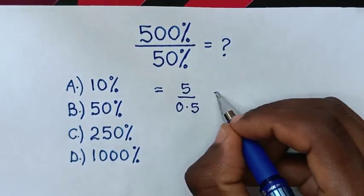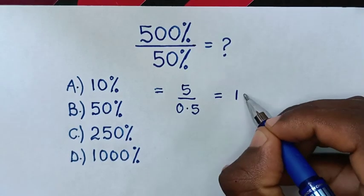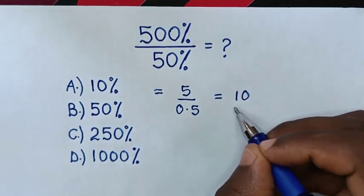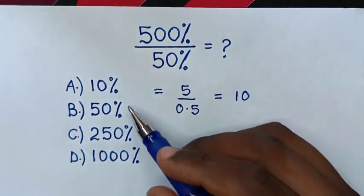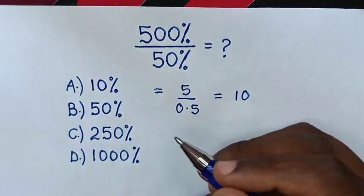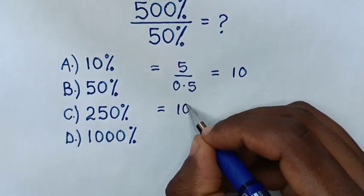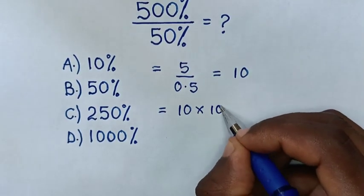Then, this will be equal to 5 divided by 0.5, which is 10. Now, this is a decimal number, but our answers are in percentage. So, we'll convert to percentage. Then, it is equal to 10 times 100%.